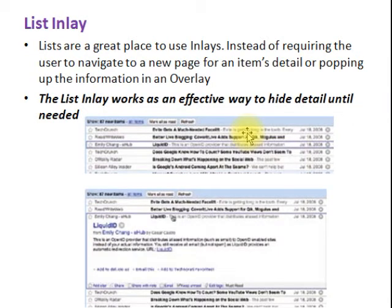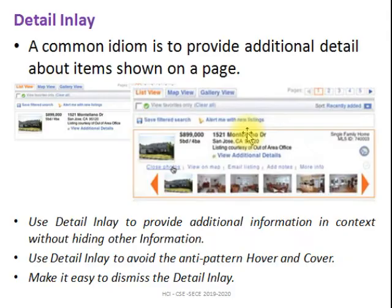The next type is the list inlay. In a list inlay, you have a list of menu items shown normally. If you want more information about a list item, you click on it and the information about that item is shown right there. Lists are a great place to use inlays instead of requiring the user to navigate to a new page for item details or popping up information in an overlay.